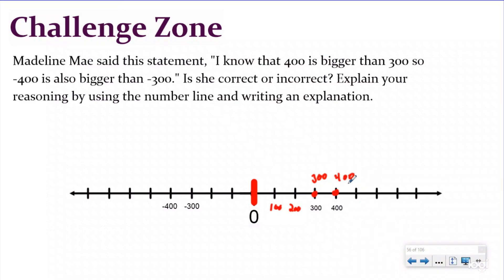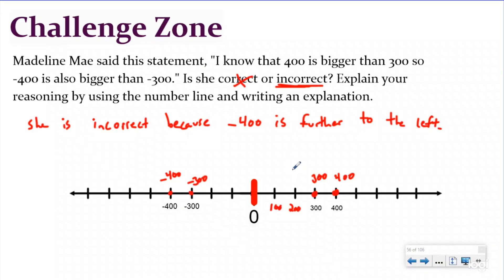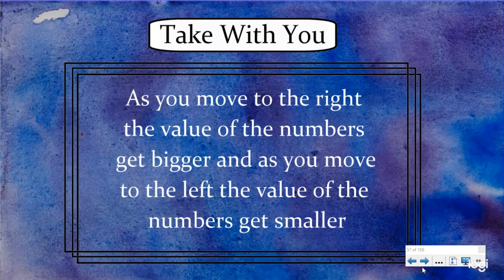But when we mark negative 400 and negative 300 on the number line, we can see her answer was incorrect. Negative 400 is less than negative 300 because it's further to the left. Just because 400 is bigger than 300 in positives doesn't mean the same thing in negatives. The explanation you would write: she is incorrect because negative 400 is further to the left than negative 300. You proved it on the number line and wrote your explanation.